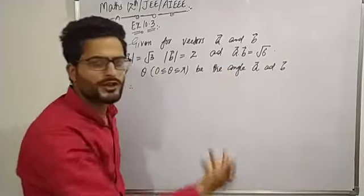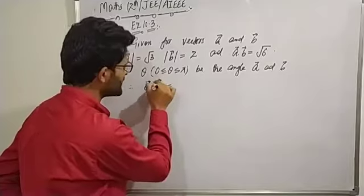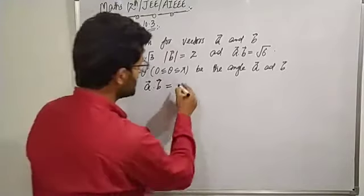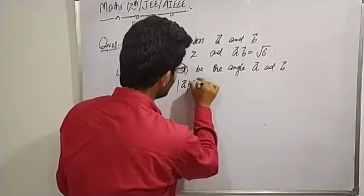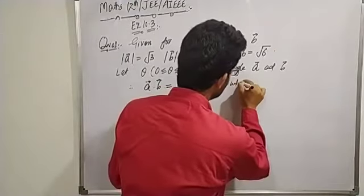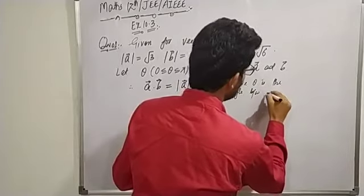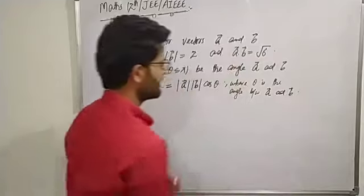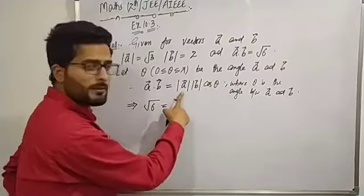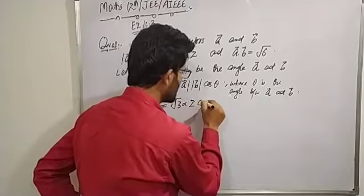By the definition of dot product, a·b = |a| × |b| × cos θ, where θ is the angle between a and b. Substituting, √6 = √3 × 2 × cos θ, which gives cos θ = √6 / (2√3).